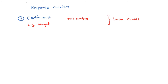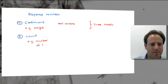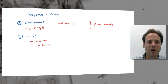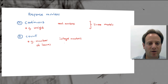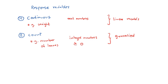Now what happens if we count something? An example for a count would be the number of leaves of a plant. These are not real numbers; they are so-called integer numbers and are usually greater than or equal to zero. We also use linear models to analyze these count data, and quite often we use so-called generalized linear models.